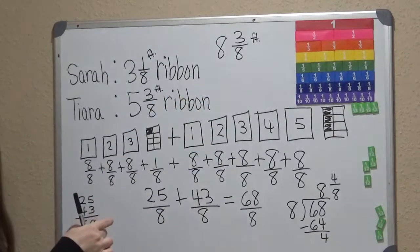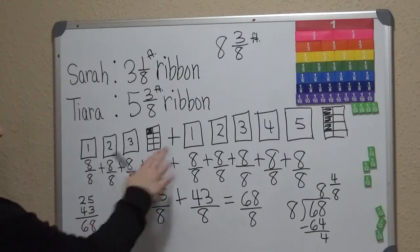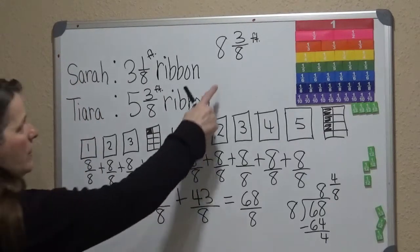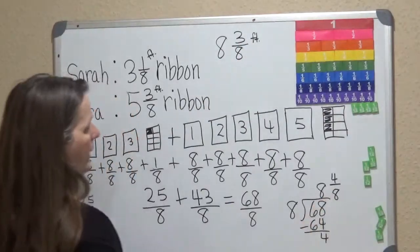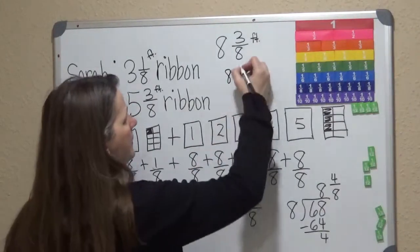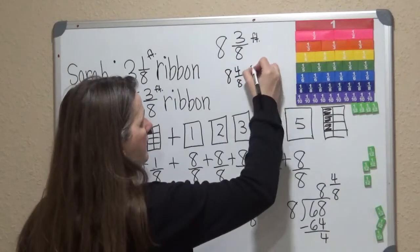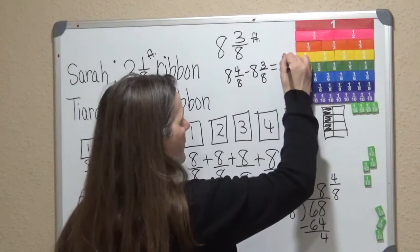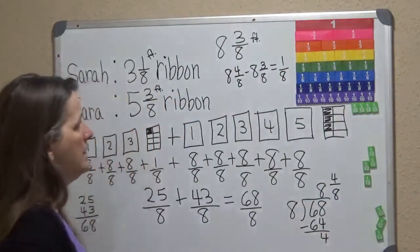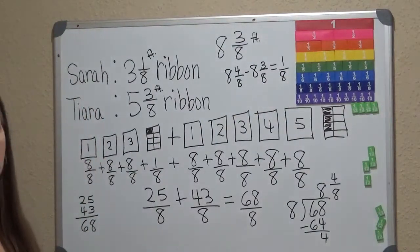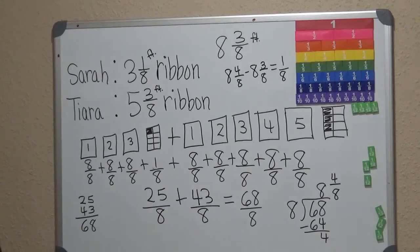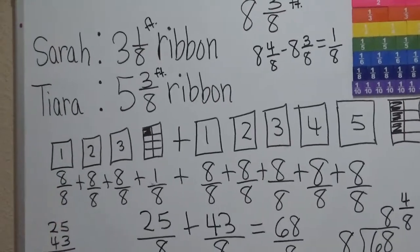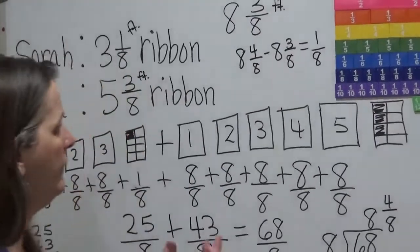Our goal is to get to 8 and 3 eighths. So when we're officially looking at this, we know that we have enough to do the project — Sarah and Tierra combined have 8 and 4 eighths. For the subtraction part: 8 and 4 eighths minus 8 and 3 eighths. 8 take away 8 gives us 0, and 4 take away 3 gives us 1. We leave the denominator the same, so we have 1 eighth left. So they can do the project.